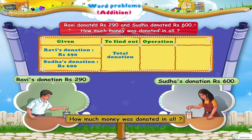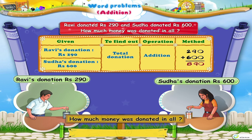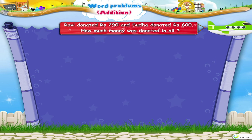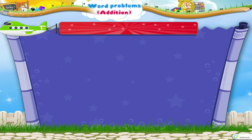Which operation is to be performed? Addition. Now add the two numbers: two hundred and ninety plus six hundred. Zero plus zero equals zero. Nine plus zero equals nine. Two plus six equals eight. So, the total donation is rupees 890.